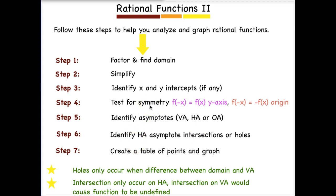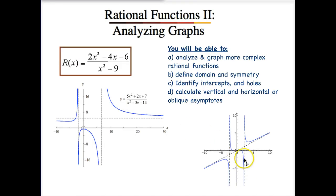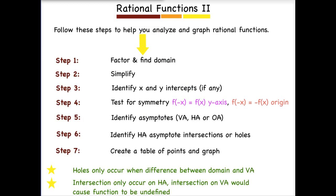Step four, we'll test for symmetry, which helps us to visualize and better graph the function. Step five, we identify all of our asymptotes — whether vertical, horizontal, or oblique. Then step six, we identify any asymptote intersections or potentially holes. Notice that a middle leg can intersect an oblique asymptote — that is an asymptote intersection, and by finding the X or Y intercept we're able to identify that. A hole will only occur when there is a difference between our domain and our vertical asymptote — meaning something was simplified.